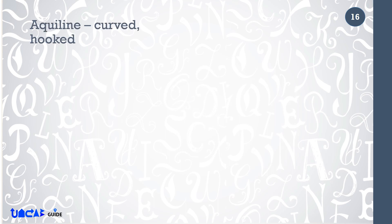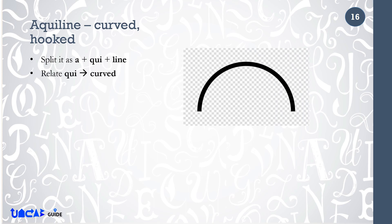Aquiline means curved or hooked. Split it as A plus Qui plus Line. Relate Qui to curved. So now it is a curved line. So, aquiline means curved or hooked.